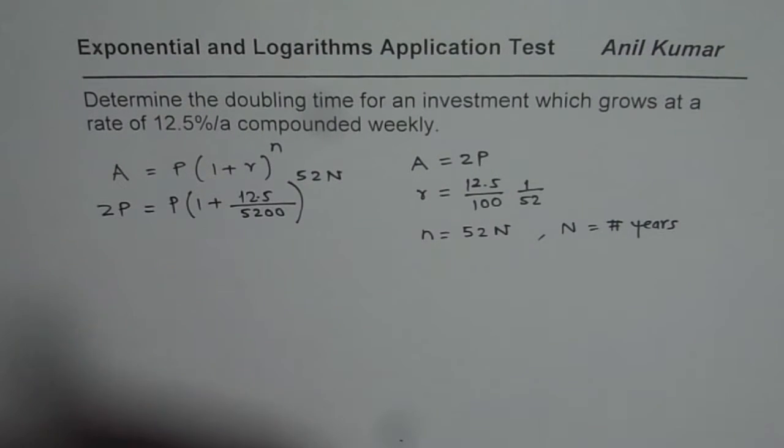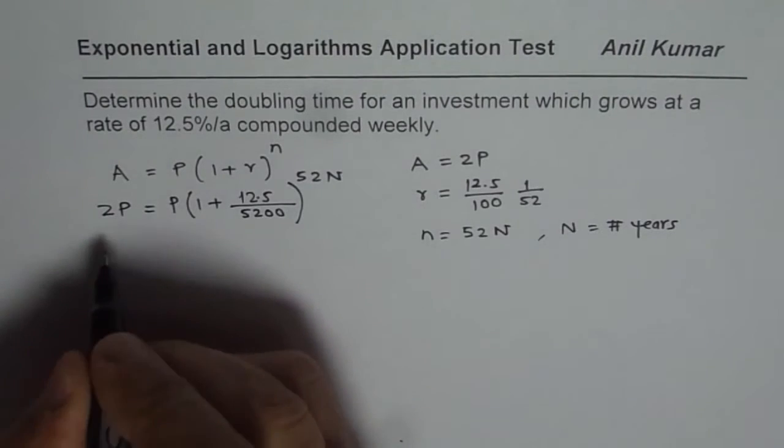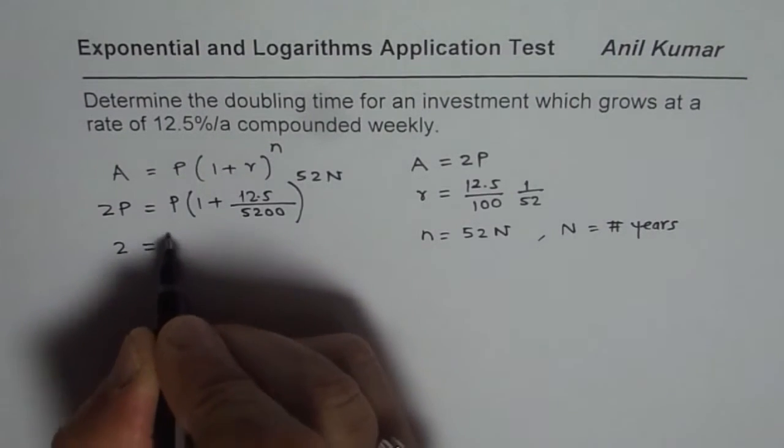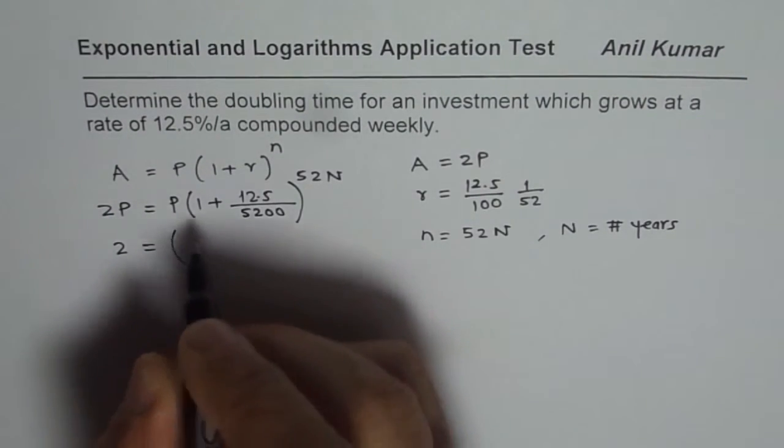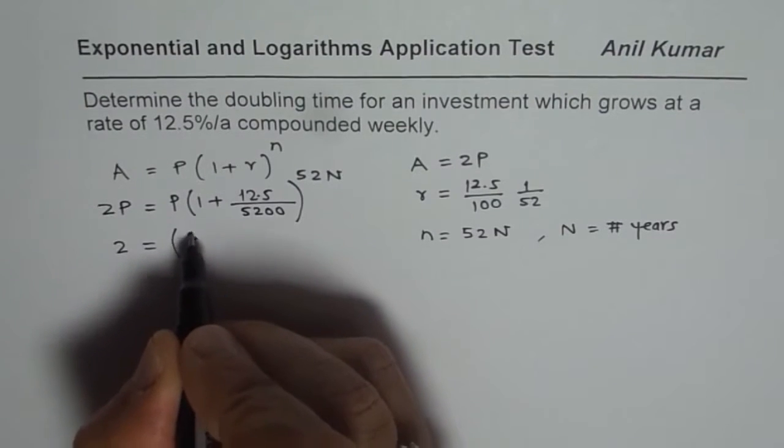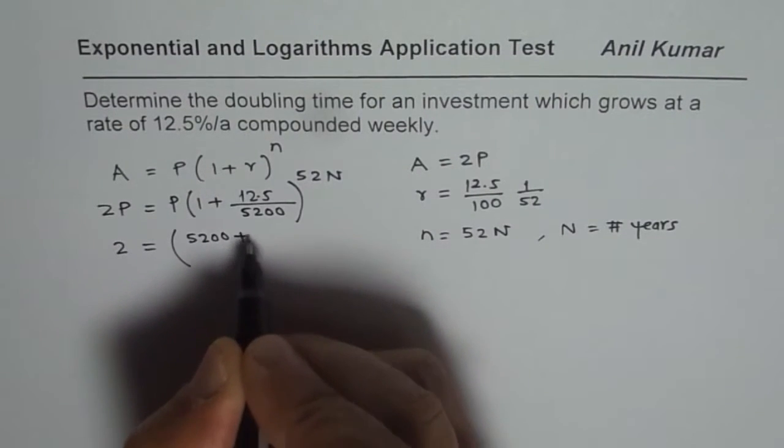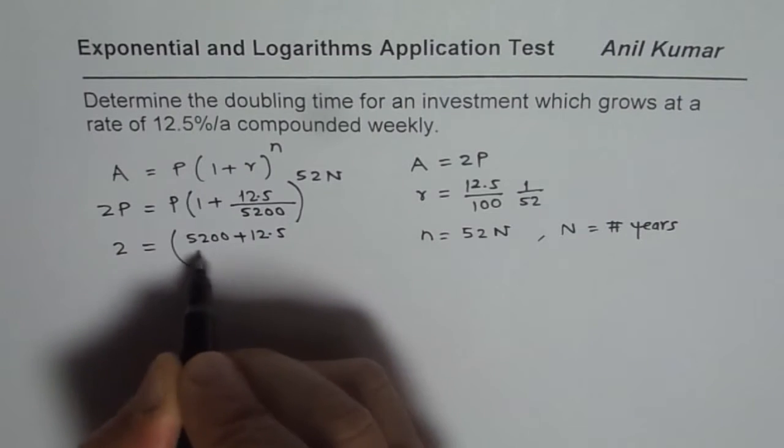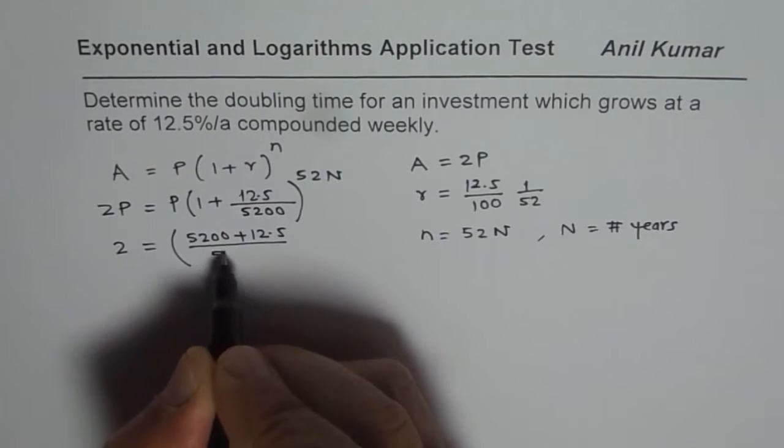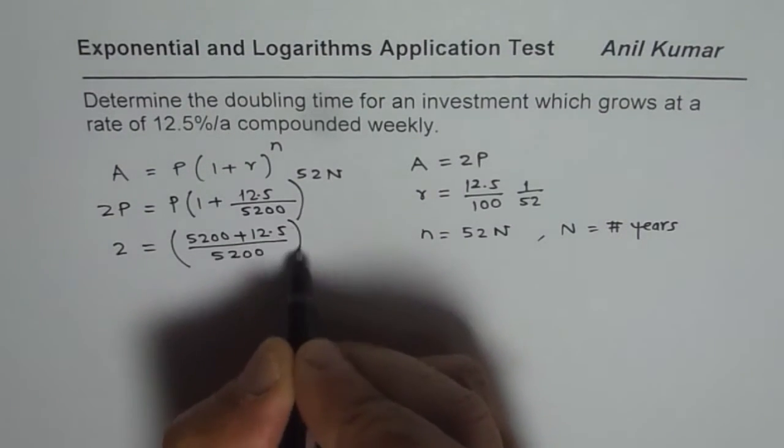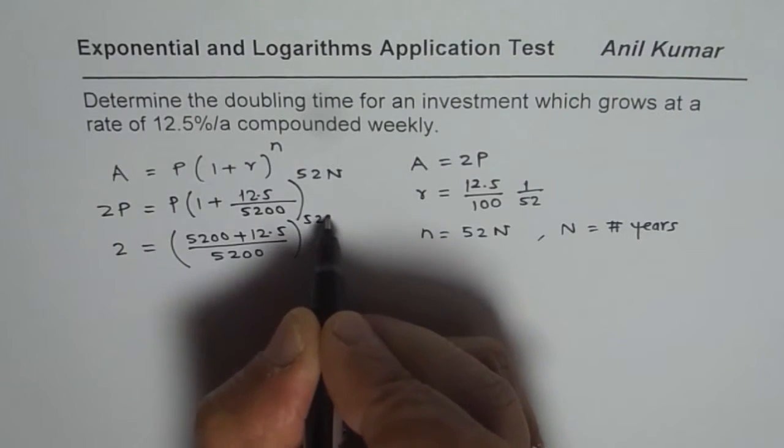Now to solve this equation, I will divide by P, so I will get 2 equals to... We can take common denominator, so we have 5200 plus 12.5 divided by 5200 to the power of 52n.